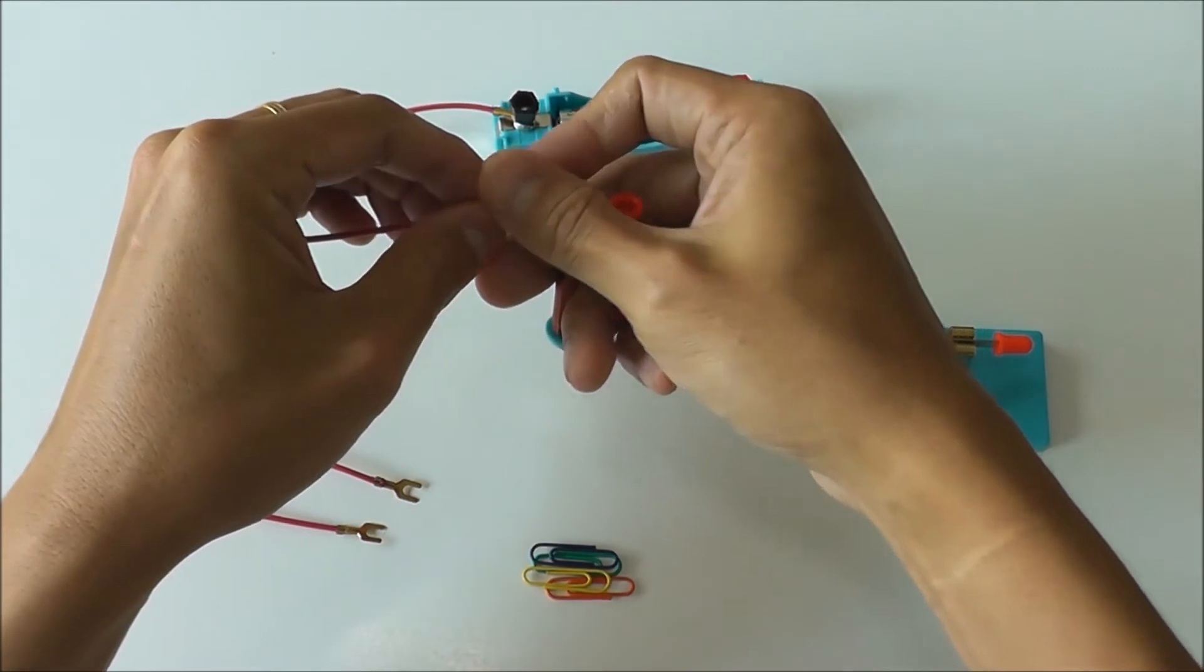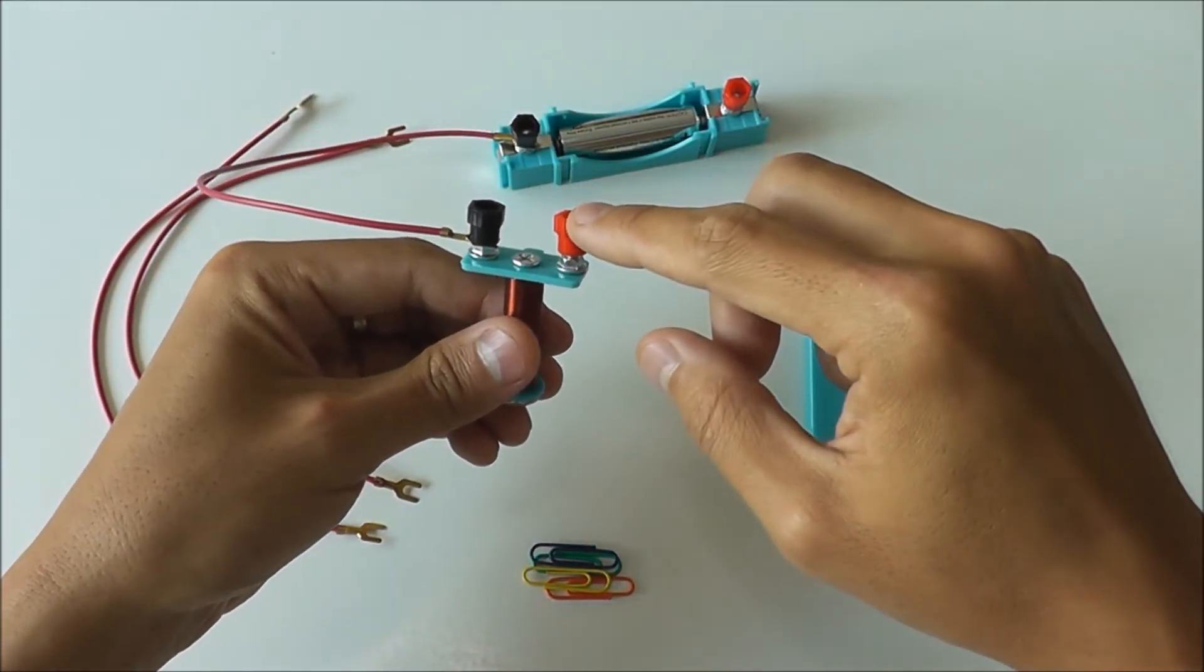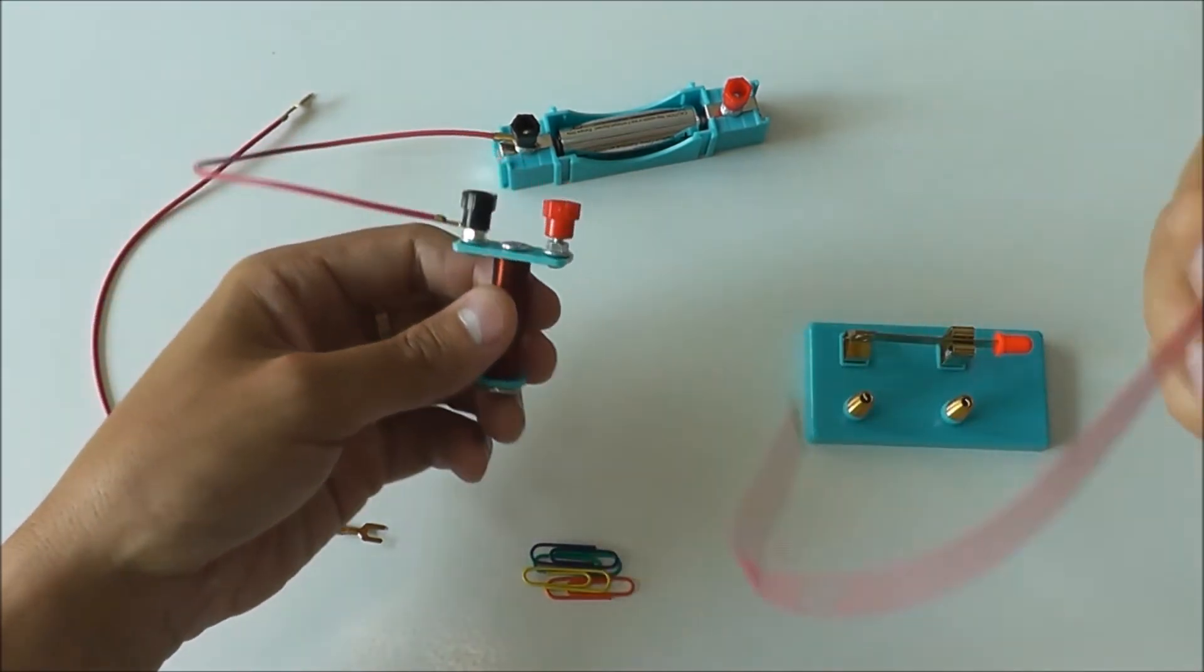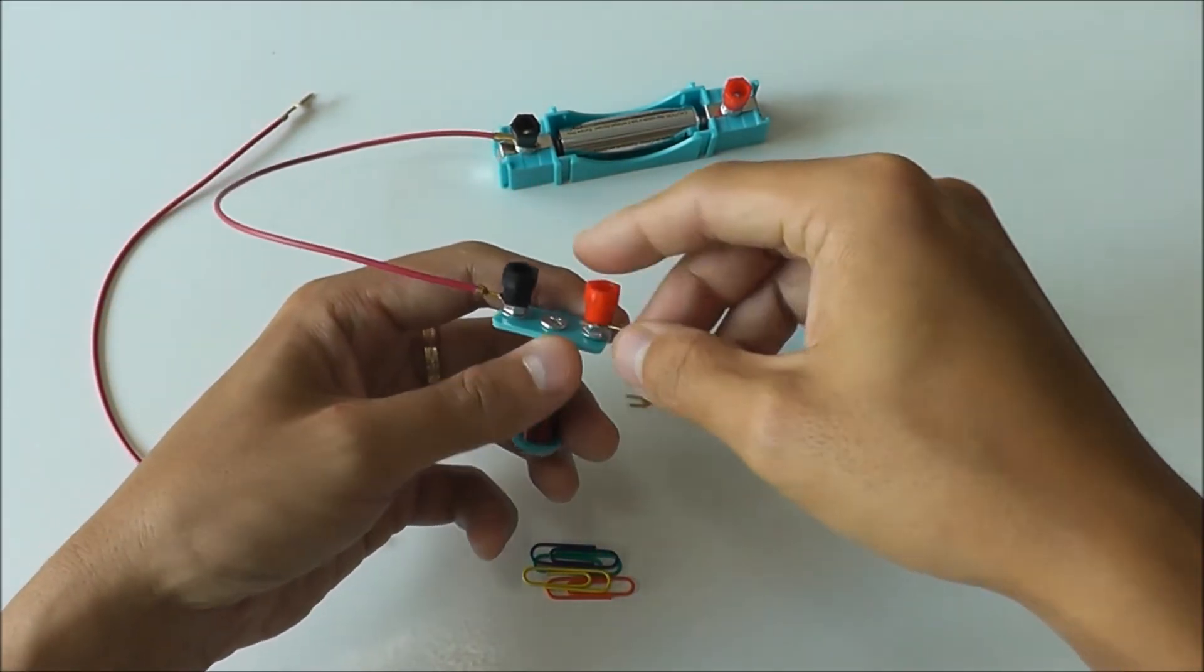Although you see that there is a black knob and a red knob here, this electromagnet does not require a fixed polarity. As long as you connect it in a series connection, no matter in which direction or manner, it will still work.